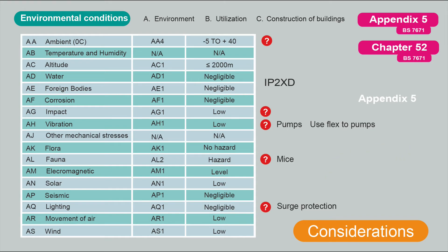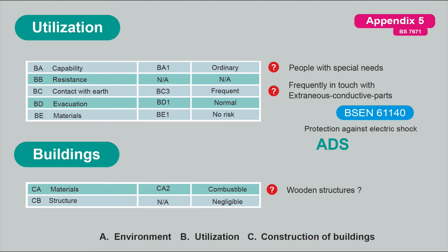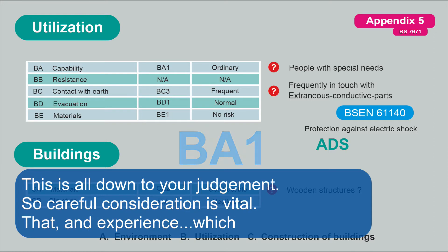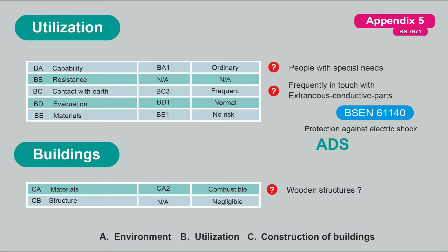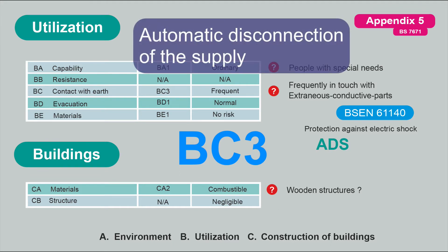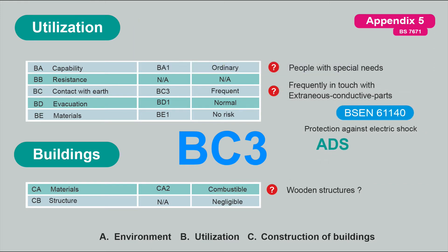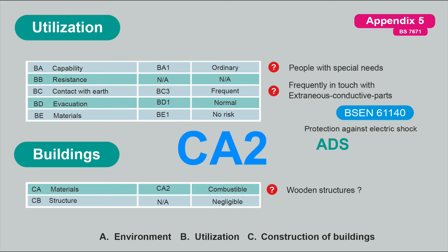Electromagnetic level is low, solar is low, seismic is negligible, lightning is negligible but we have surge protection now. Wind is low. For utilization capabilities, I've gone for ordinary persons — it's a standard house, though you might want to consider people with special needs or disabilities. Contact with earth and extraneous conductive parts is a consideration. Evacuation is normal. There are no stores of combustible materials in the house, and I have no concerns regarding the structure.